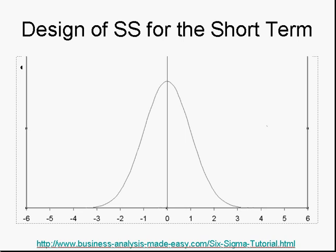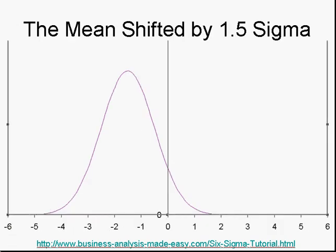When the Six Sigma process is designed, the Six Sigma standards are set for the conditions that exist at that point in time. However, in the long term or over time, it is assumed that the mean can wander up to 1.5 sigmas from its starting point. This could be on either side of the original mean. So the actual calculations are for 4.5 sigmas away from the nearest standard, as shown in the graph.